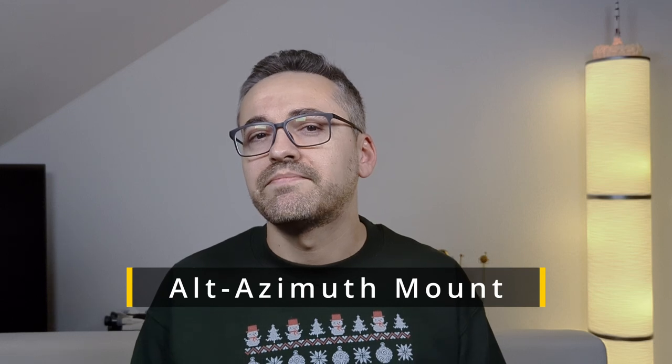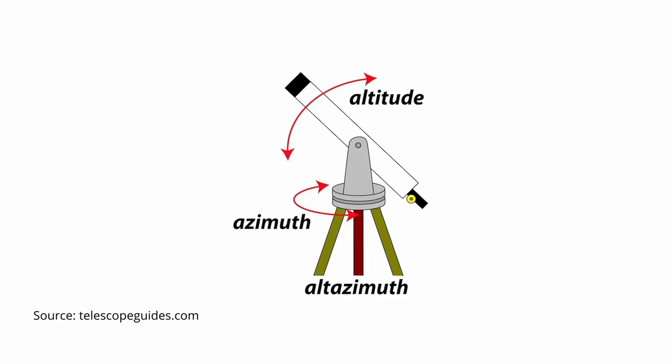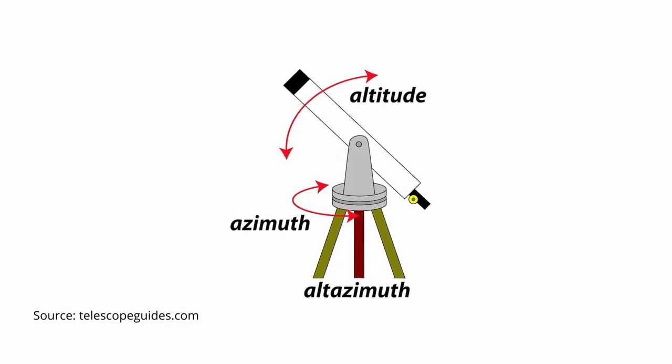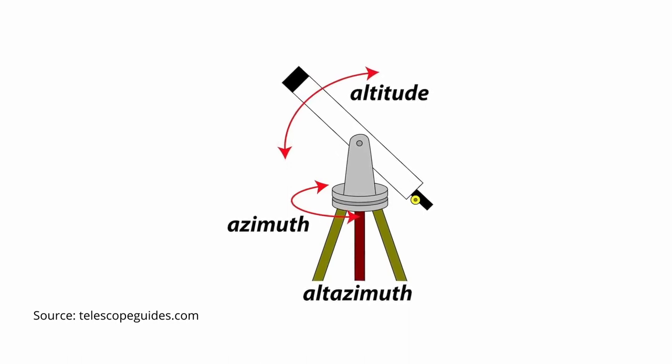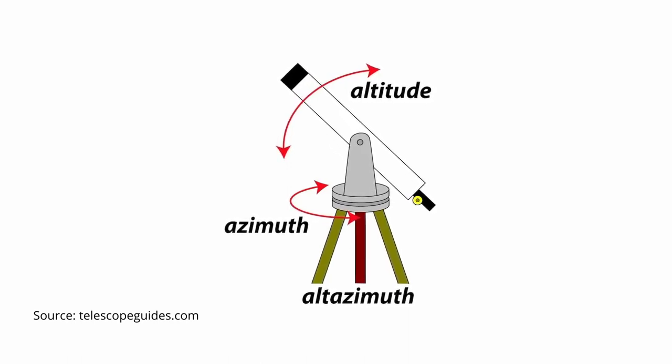What is an AZ mount? AZ stands for azimuth and describes a type of mount where the telescope is configured around a vertical azimuth axis of rotation and a horizontal cross-axis, the altitude or elevation axis. This means the horizontal x-axis is parallel to the ground and you point the telescope up by tilting it vertically along the y-axis. To follow a star across the night sky, you need to move the telescope on both the x-axis and y-axis to keep the object centered in the field of view.